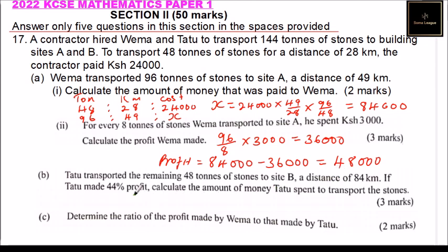We now come to Part B. Tatu transported the remaining 48 tons of stones to site B, a distance of 84 kilometers. If Tatu made a 44% profit, calculate the amount of money Tatu spent to transport the stone.